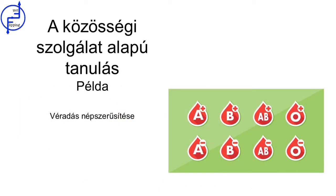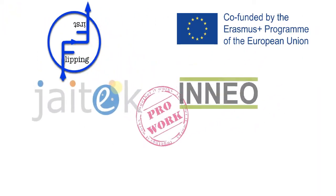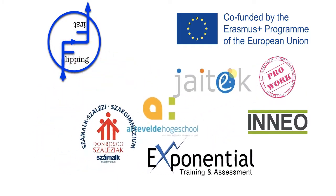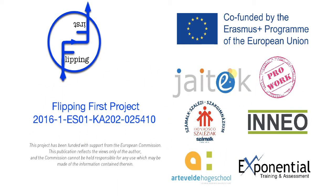An example of service-based learning is the organisation of a blood donation campaign. Students organise the campaign to increase the number of donors. The learnings acquired by the student are related to the area of science, related to the knowledge about blood and its components, as well as the need to make donations. Also, communicative and organisational skills are developed and used.